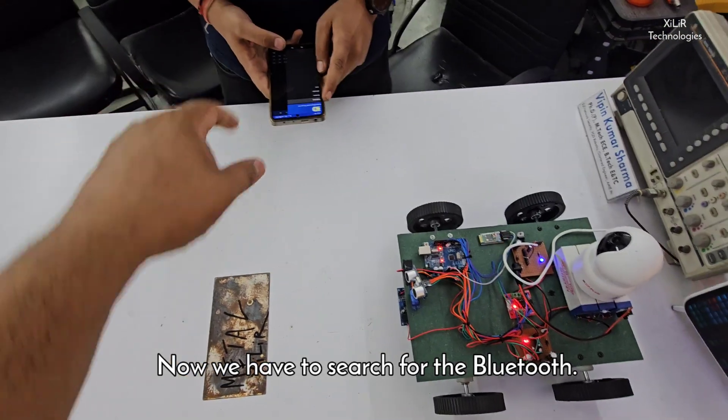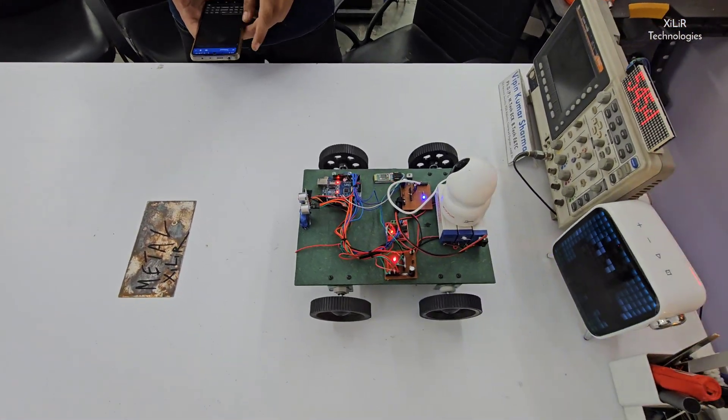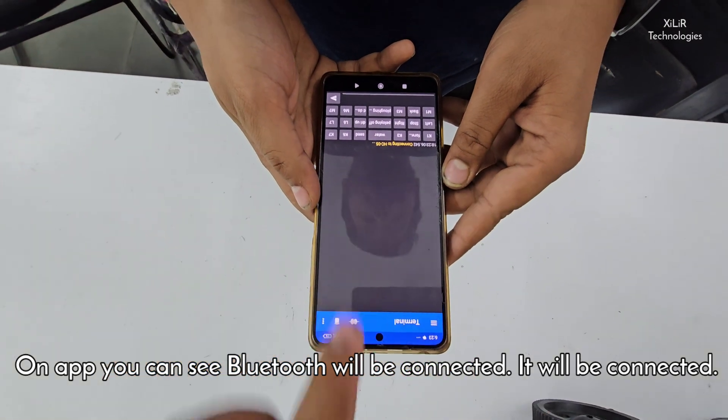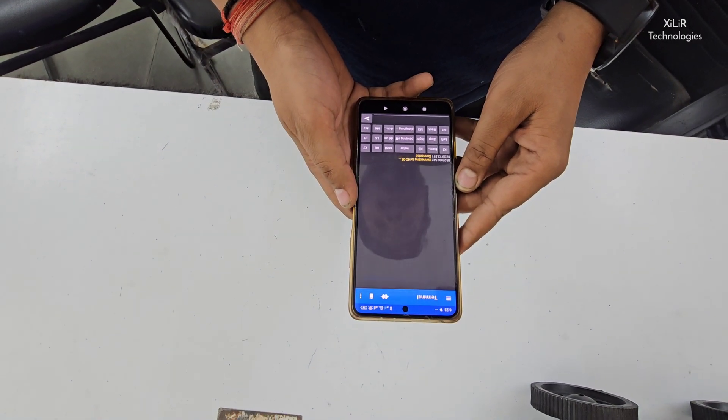Now we have to search for the Bluetooth and then we have to connect on app. You can see the dozer will be connected. We have to wait. Okay, now it is connected.